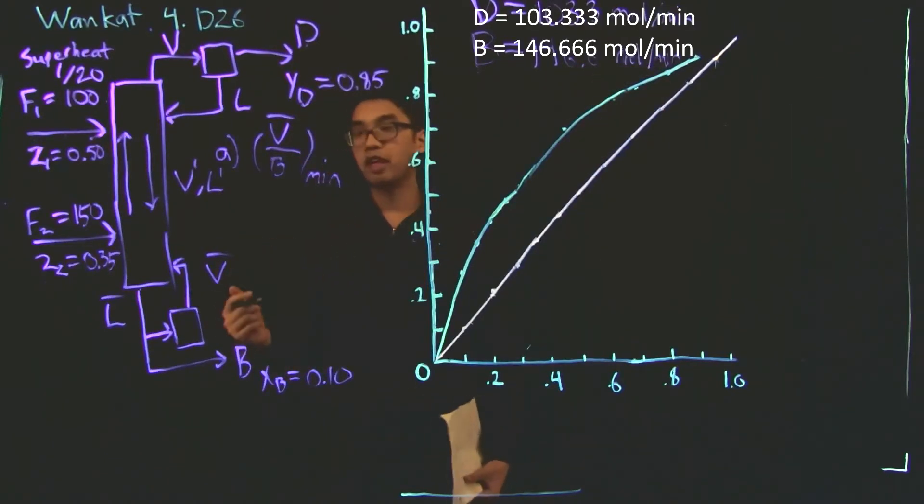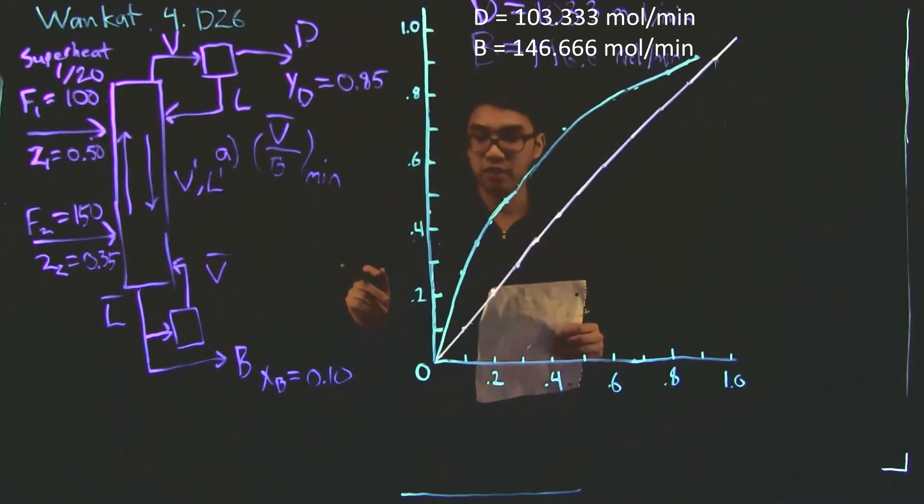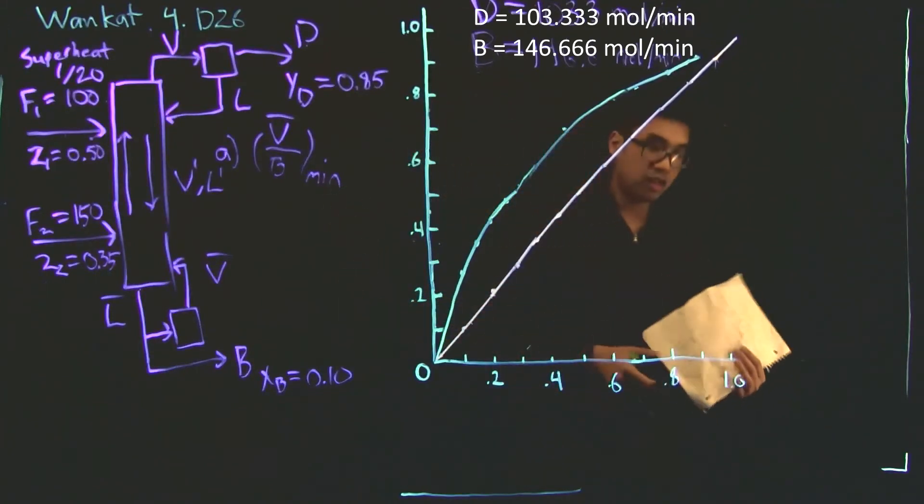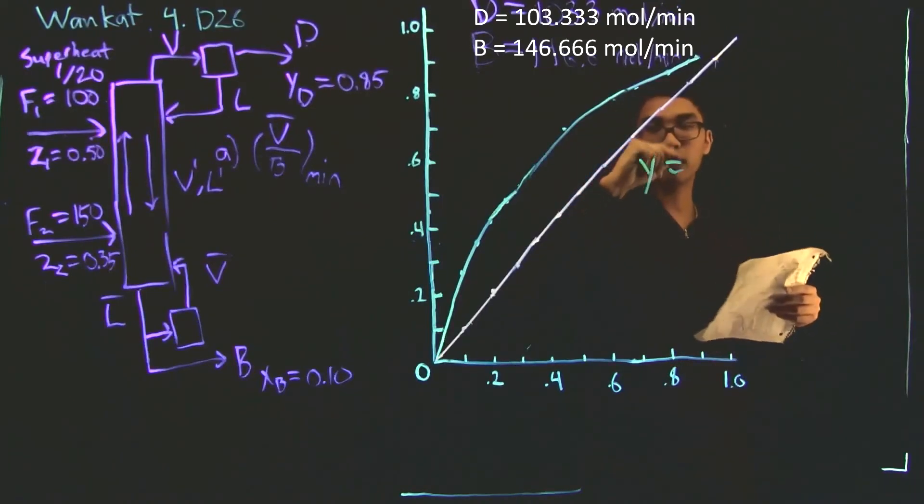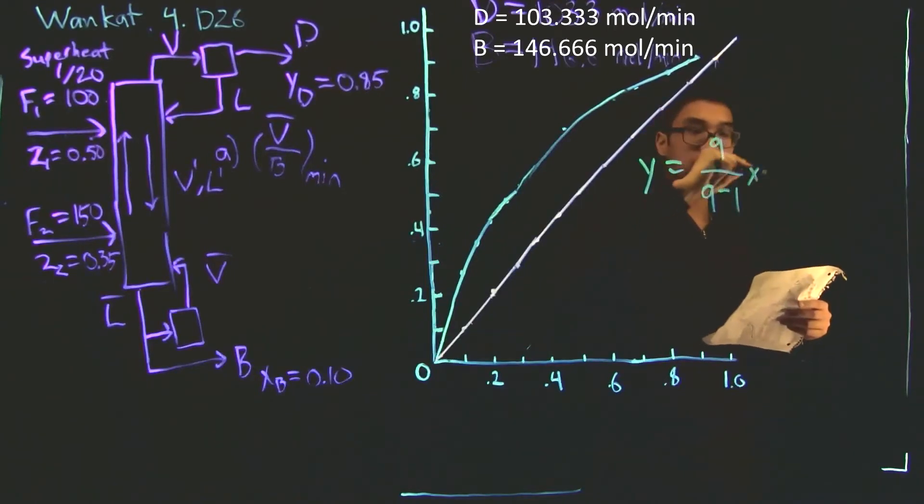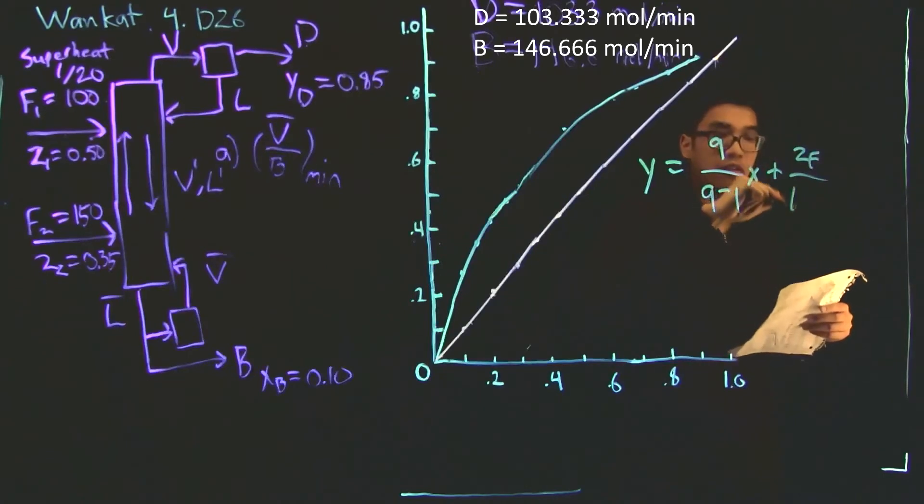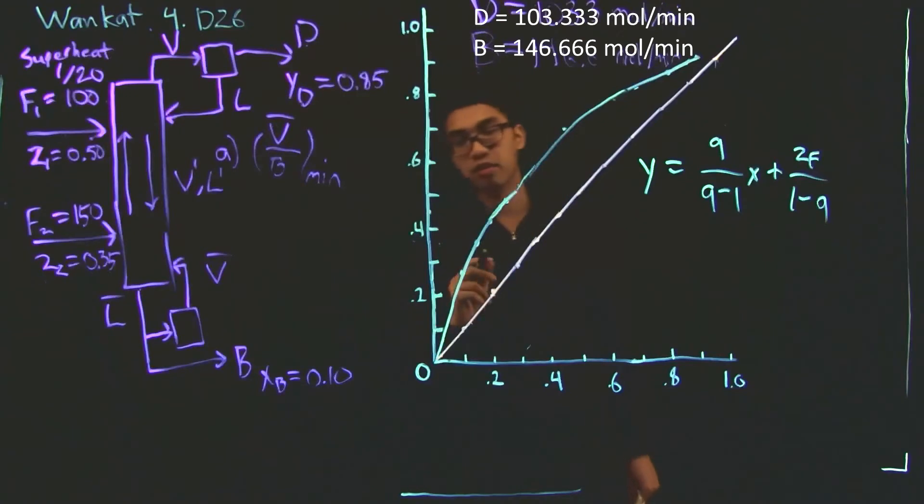And B is equal to 146.6 moles per minute. The flow rates at the top are driven by equilibrium. So we don't really have a way to calculate them. So the next step here is to calculate the feed lines. And as a reminder, the feed lines are given by equation Y is equal to Q over Q minus 1 X plus ZF over 1 minus Q. The first step in calculating the feed line is to determine the value of Q. Now, Q is the feed quality and it is the fraction of the stream that remains liquid after it's been fed into the column. So for F2, F2 is a saturated liquid. So the whole stream is liquid. And so Q2 is equal to 1.